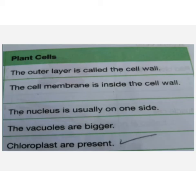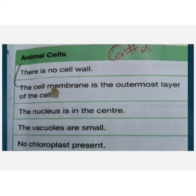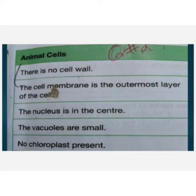Next is the animal cell. The animal cell does not have a cell wall. Animals are heterotrophs and plants are autotrophs.